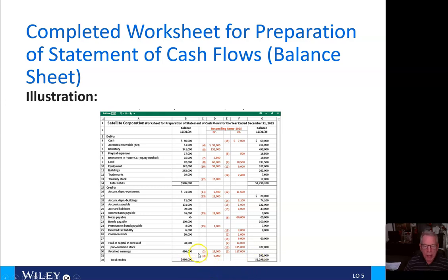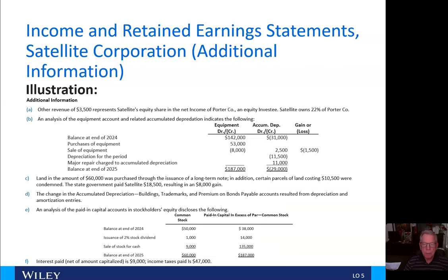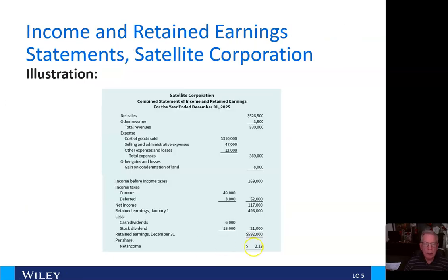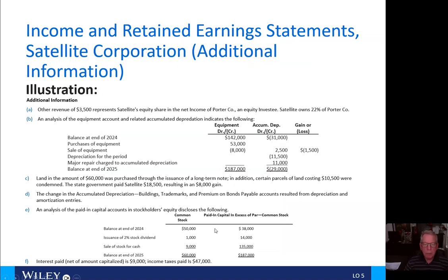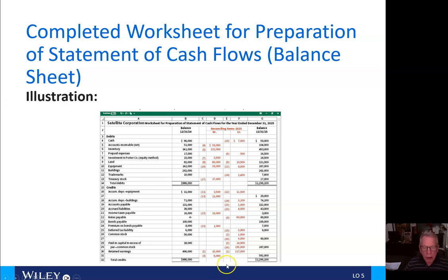For number two, we have $15,000 here in retained earnings representing the dividends — specifically the stock dividend. We also have $1,000 here for common stock and $14,000 here for paid-in capital in excess of par on that common stock, totaling $15,000 for that stock dividend.